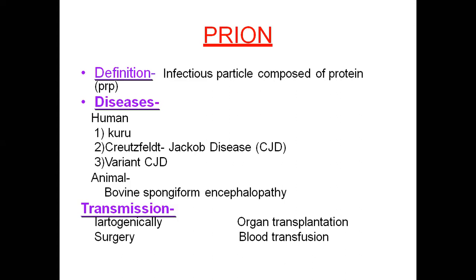Transmission of prions occurs via the iatrogenic route: surgery, organ transplantation, and blood transfusion. Iatrogenic means contaminated particles involved during surgical procedures cause transmission. Blood transfusion is a major transmission factor.